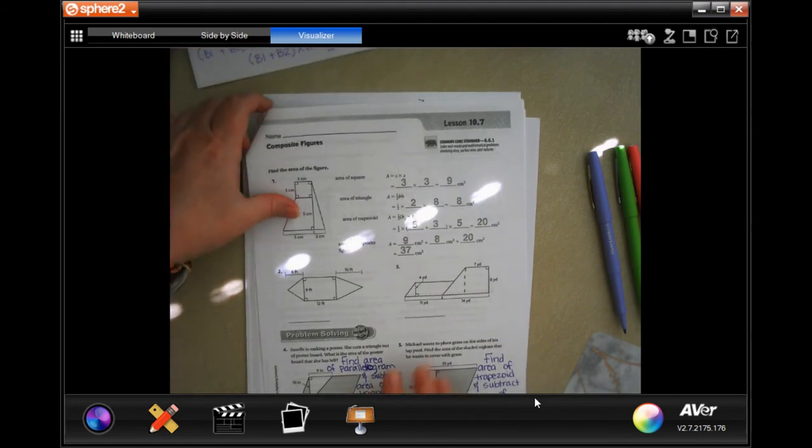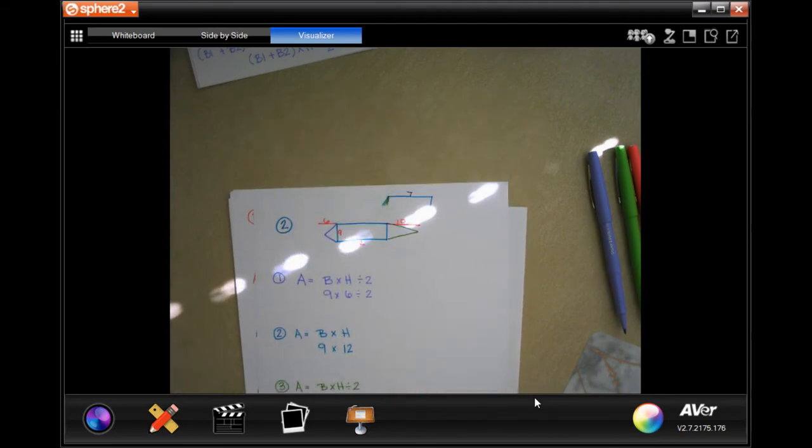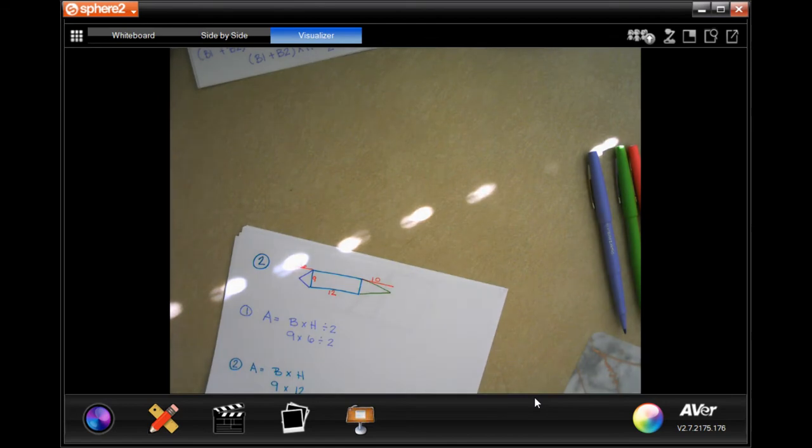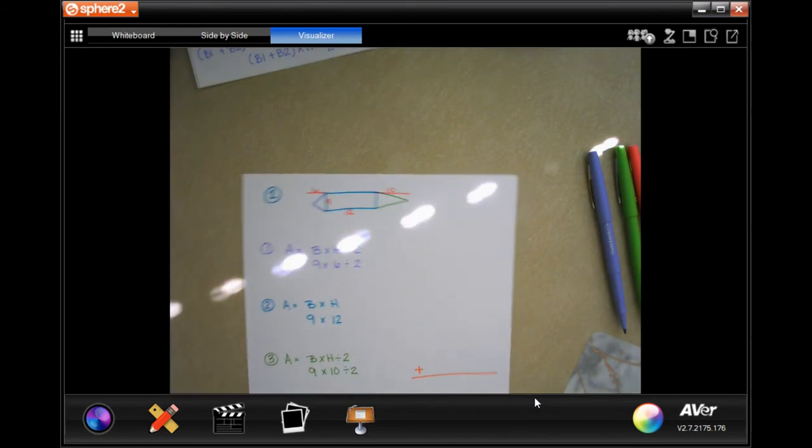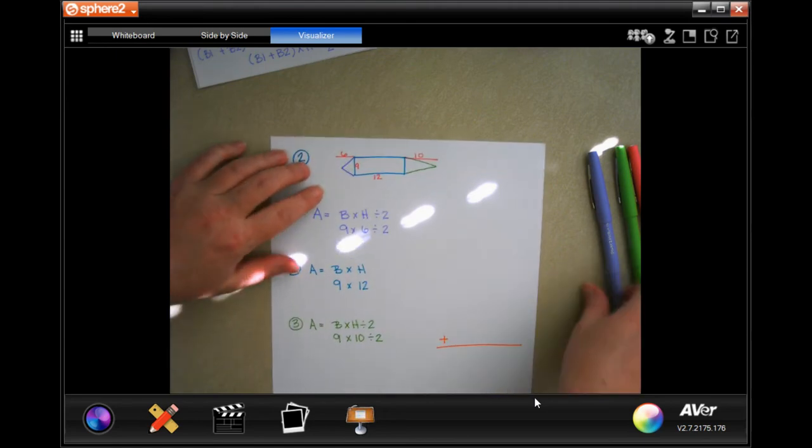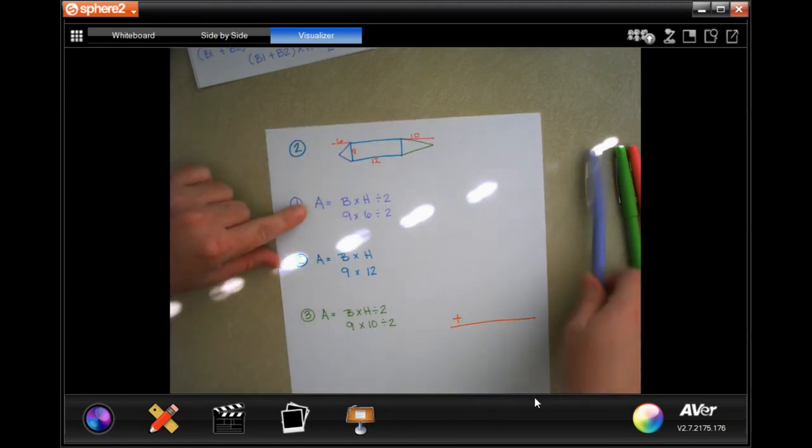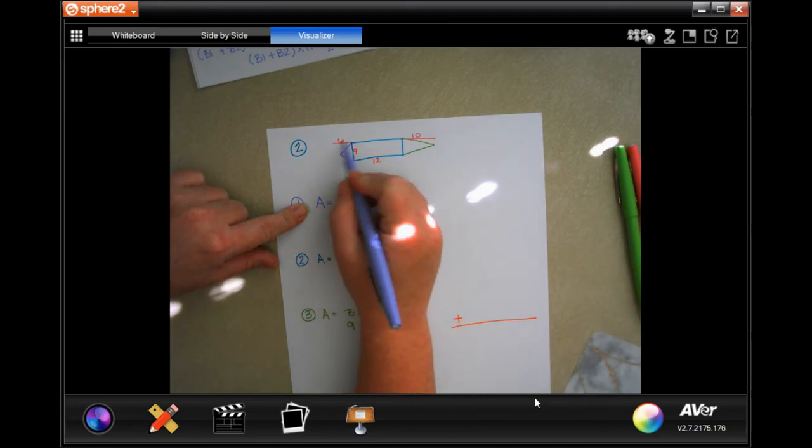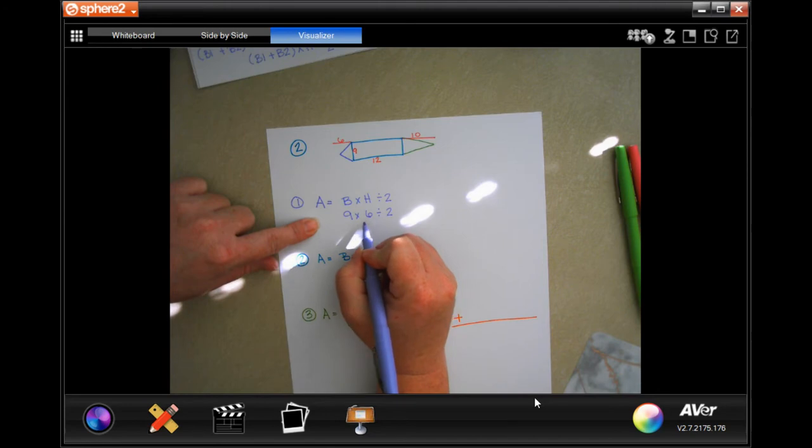I actually rewrote these on another paper so we can do them together. This is number two. What we're doing is breaking it up into the different shapes. The shape of the first triangle is 6 by 9, so that's 54 and we're going to divide that by 2.